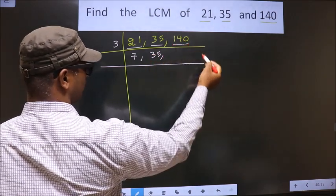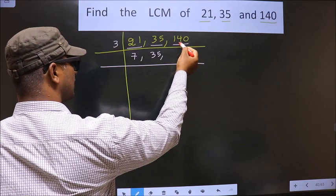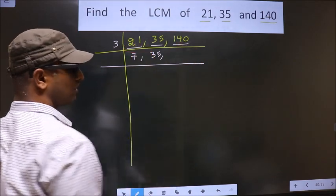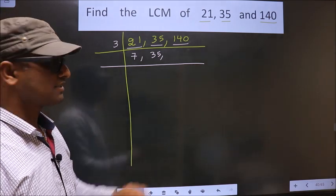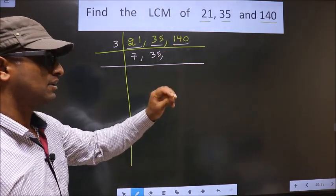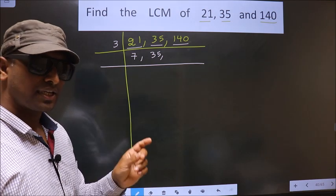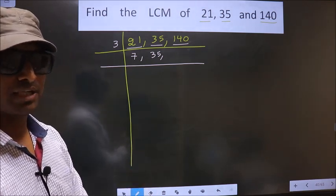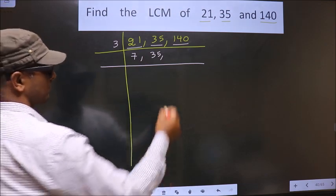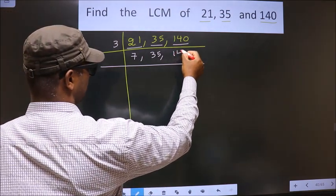Now next number is 140. To check whether this is divisible by 3 or not, for that we should add the digits. That is 1 plus 4 plus 0, we get 5. Is 5 divisible by 3? No. So this number also not divisible by 3. So you write down this number as it is.